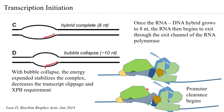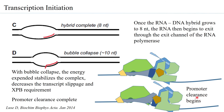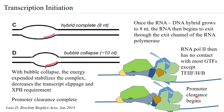What remains behind is generally the TF2D region, which stays bound to the promoter region. The other part of the pre-initiation complex moves ahead — and therefore there is what is clearly called promoter clearance.